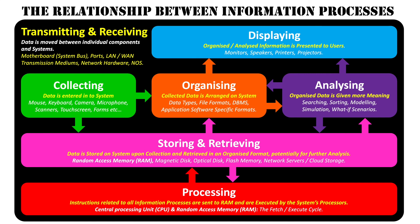This video has outlined the logic behind how the information processes connect with one another. It starts with collecting, goes on to organizing and analyzing, then things overlap as storing, retrieving, and processing occur behind the scenes with all other information processes. The end product the user sees is displaying. Remember, this isn't the definitive way the information processes occur — there are many other connections you can make — but hopefully this gives you a good base understanding.